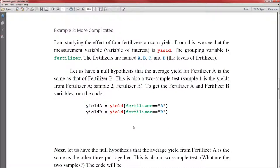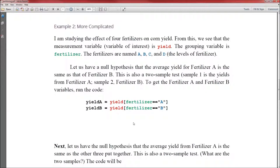Example 2, something a little bit more complicated. I'm studying the effect of four fertilizers on corn yield. From this, we see that the measurement variable is yield, that's the variable of interest. The grouping variable is fertilizer. And there are four fertilizers: A, B, C, and D. Those are the levels of the fertilizer. Notice we've got four levels in this case.